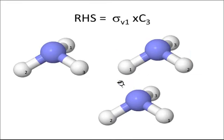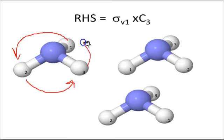Now considering the right hand side here sigma V1 and C3. First we have to perform C3 operation. That means 1 will be rotated here, here and this way.